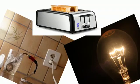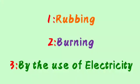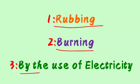So how many ways of heat production? Very good — three ways of heat production۔ Rubbing, burning, by the use of electricity۔ Rubbing means رگڑنا، burning means جلانا، and by the use of electricity میں بجلی کا استعمال ہوتا ہے۔ These are the three ways of production of heat۔